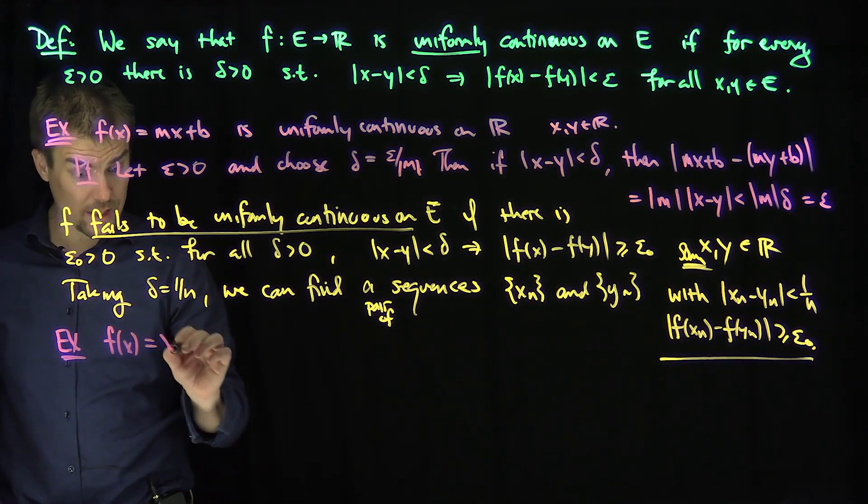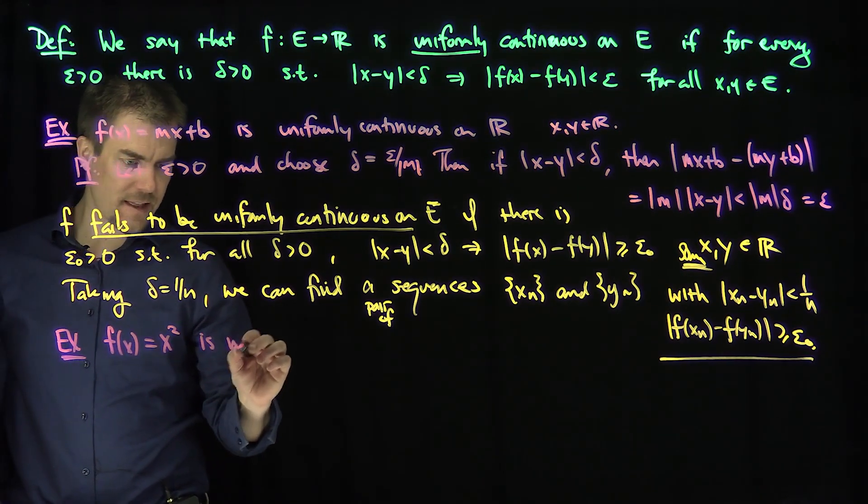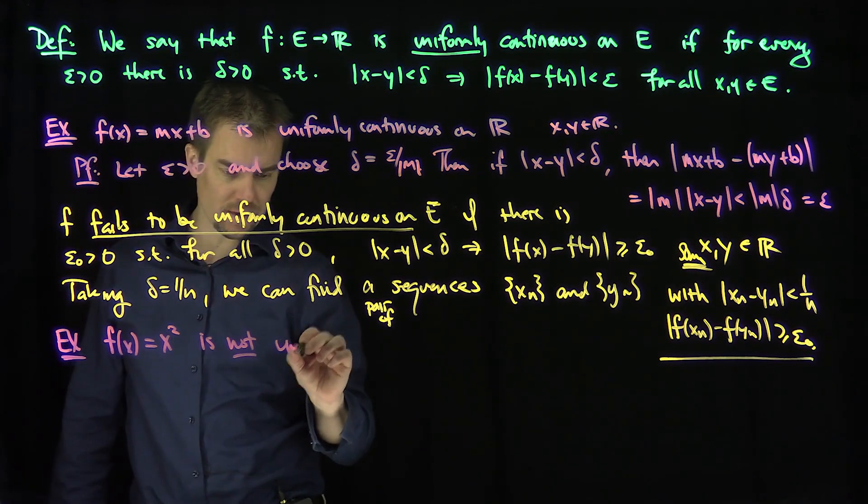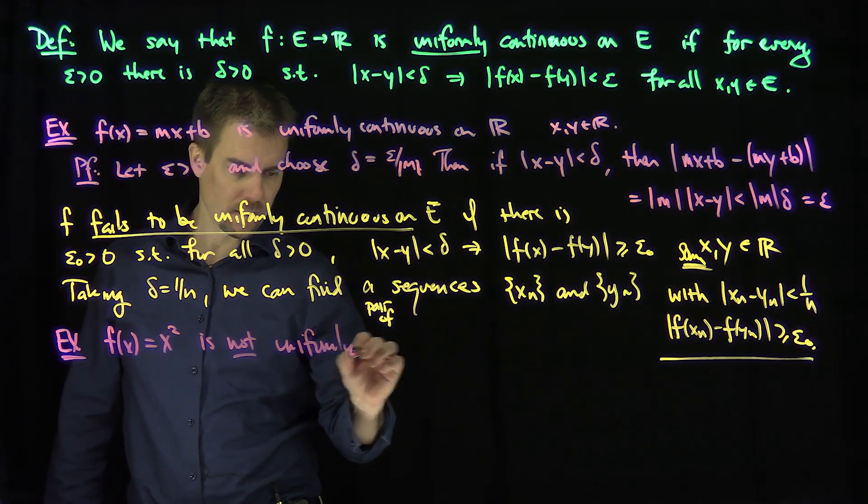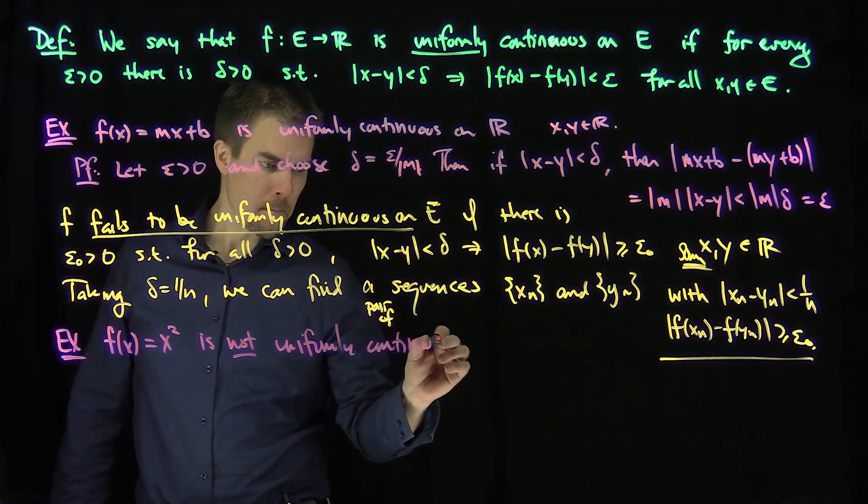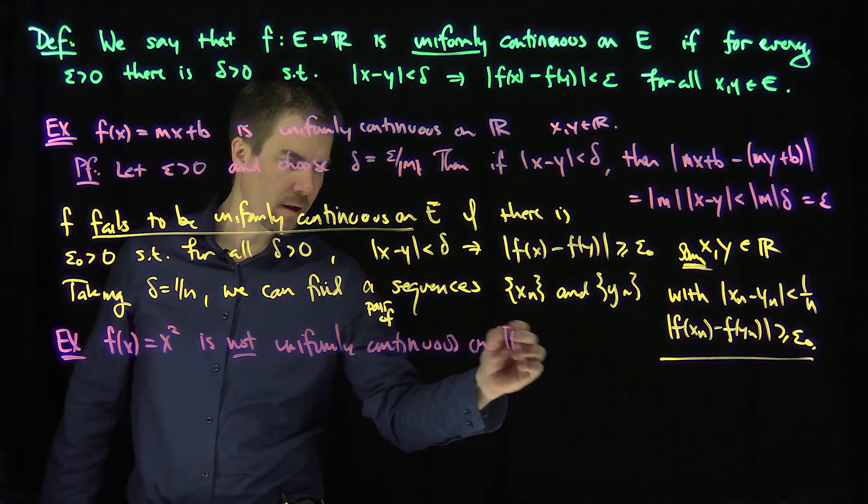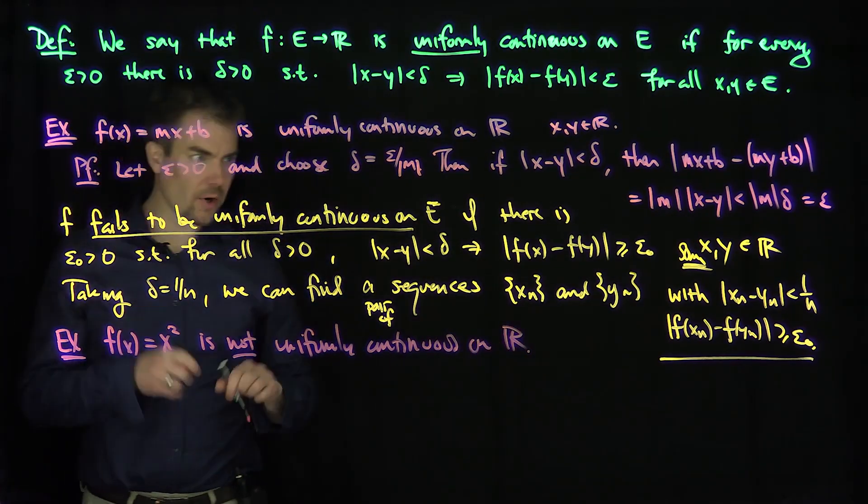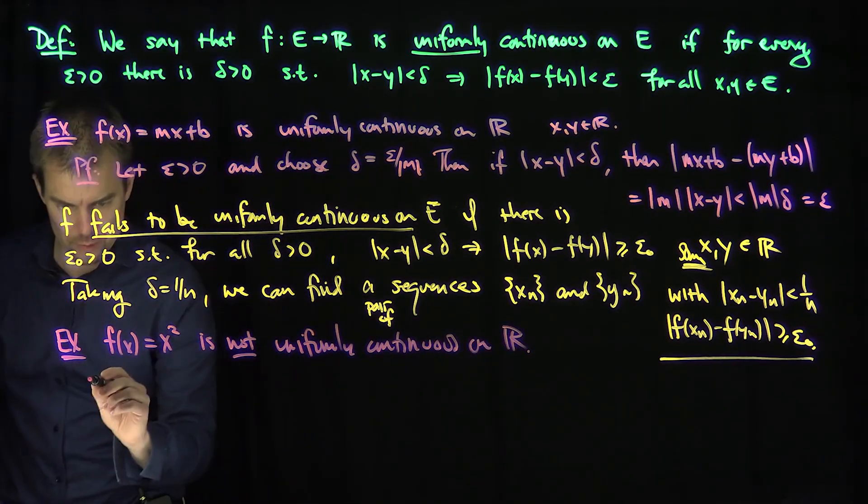Example: f of x, which is x squared, is not uniformly continuous on R. And here's what we're going to do. So I need to find this sequence. So I'm going to choose